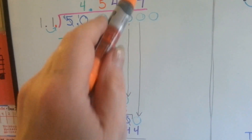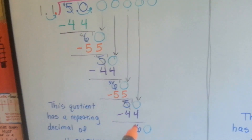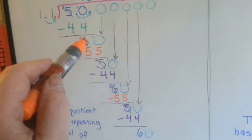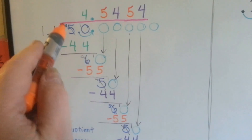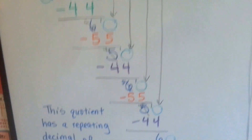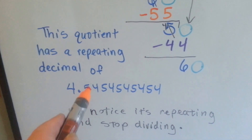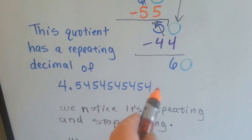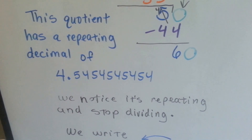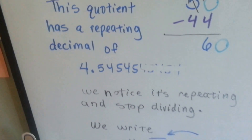11 goes into 50 four times, which is 44, which gives 60 when I drop down another 0 — just like here and here. So obviously you're just going to keep repeating 5, 4, 5, 4. This quotient has a repeating decimal of a 5 and a 4 that just keeps going and going. We notice it's repeating and we stop dividing, hopefully before you get too far — hopefully when it's like that.